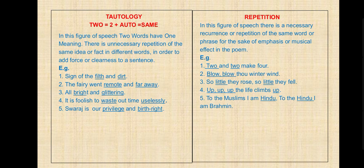Next, repetition. In this figure of speech there is an unnecessary recurrence or repetition of the same word or phrase for the sake of emphasis or musical effect in the poem. Examples: 'Two and two make four.' 'Blow, blow, the winter rain.' 'So little they rose, so little they fell.' 'Up, up, up, the life climbs up.' 'To the Muslims I am Hindu, and to the Hindus I am Brahmin.' This kind of repetition of words is used to create a musical effect.